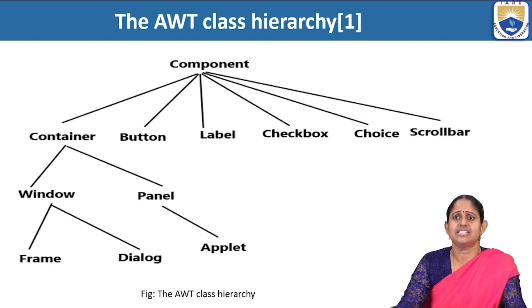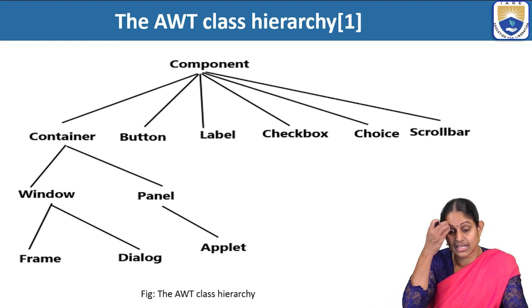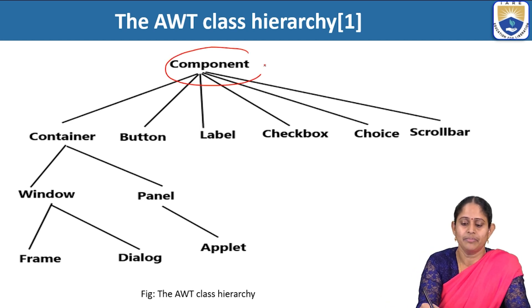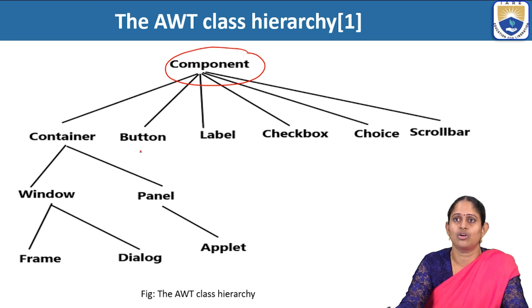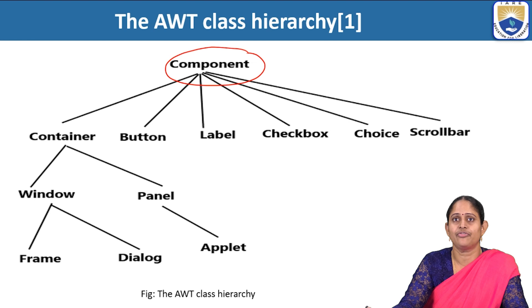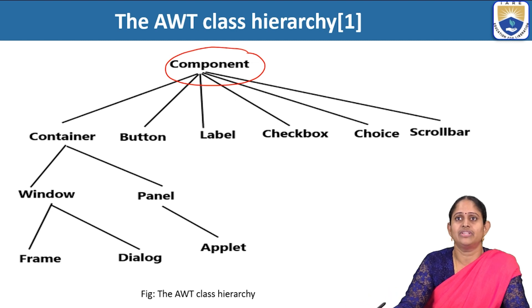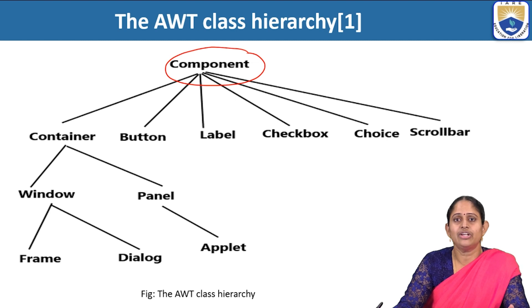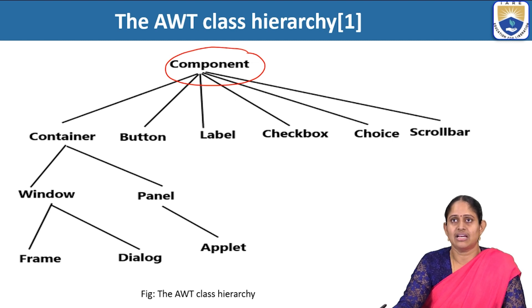Because of these disadvantages — platform dependence and heavyweight nature — they came up with the swing hierarchy. The basic AWT class hierarchy has the Component class on top, from which Container, Button, Label, Checkbox, Choice, Scrollbar and other components are created. The Component class forms a base for all these lower-level containers. The Container class contains the Window class and the Panel class. Over the Window class we can have the Frame and Dialog Box.